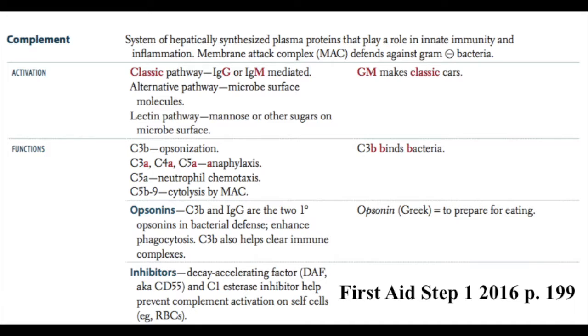C3b and IgG are the two primary opsonins in bacterial defense. C3b coming through this complement pathway and IgG created by B cells. Both of these very effective opsonins. Remember opsonins referring to the ability to coat bacteria and target it for phagocytosis. C3b also aids in the clearance of immune complexes by activating neutrophils. Decay accelerating factor or DAF and C1 esterase inhibitor help prevent complement activation on self cells, for example red blood cells.